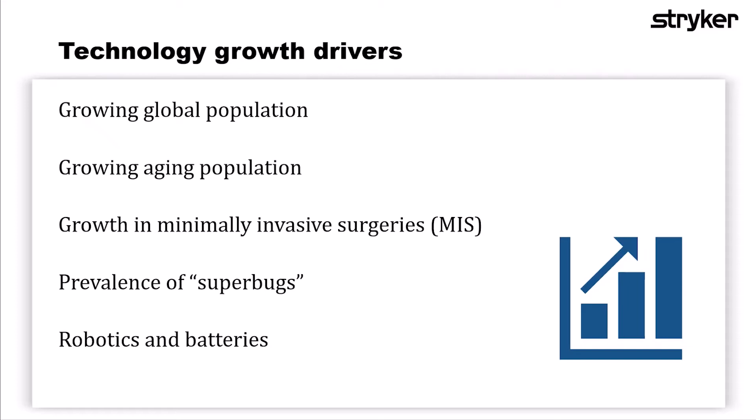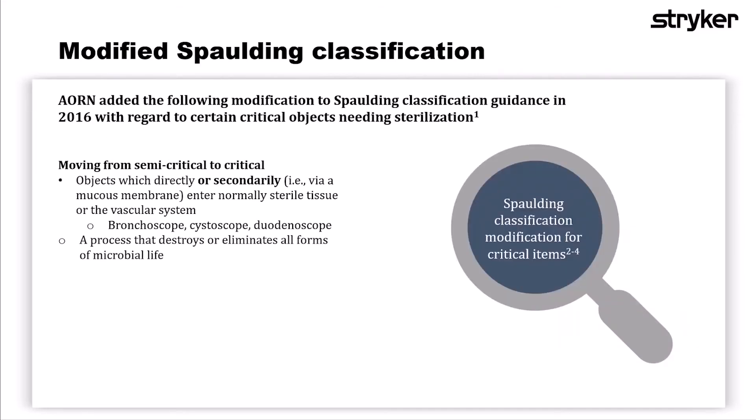Also, the introduction of superbugs — superbugs have always been around but seem to be surfacing more, especially with the increased usage of high-level disinfection. Some of the more intricate equipment we're using includes robotics and batteries. I would also be remiss if I didn't mention the changes coming with the modified Spalding classification. AORN actually took the ball and ran with this all the way back in 2016, and we have instrumentation that is going to be required for terminal sterilization.